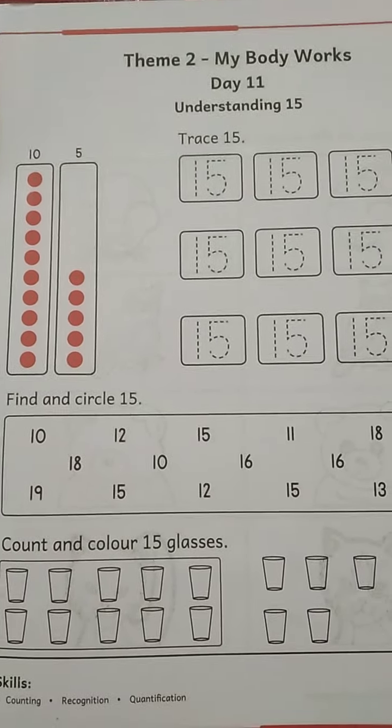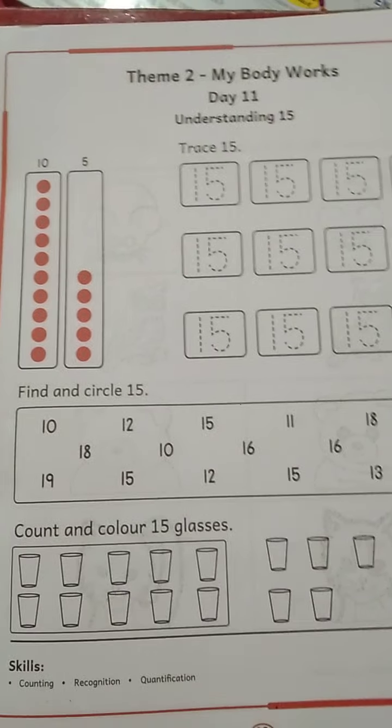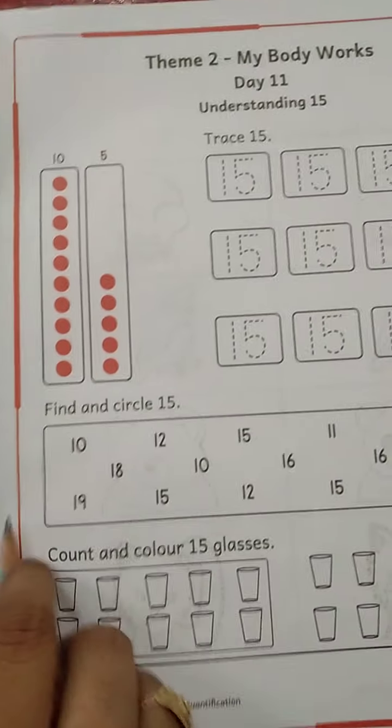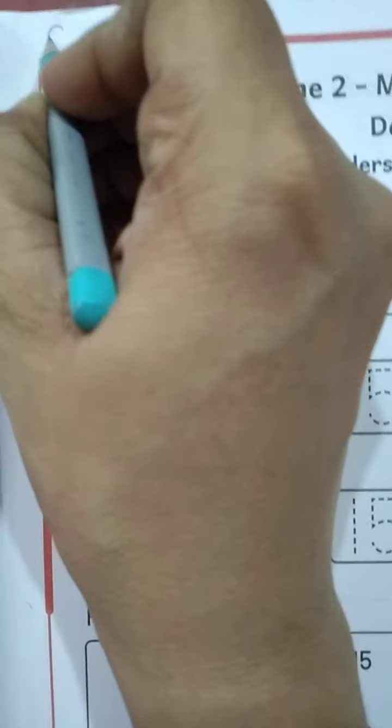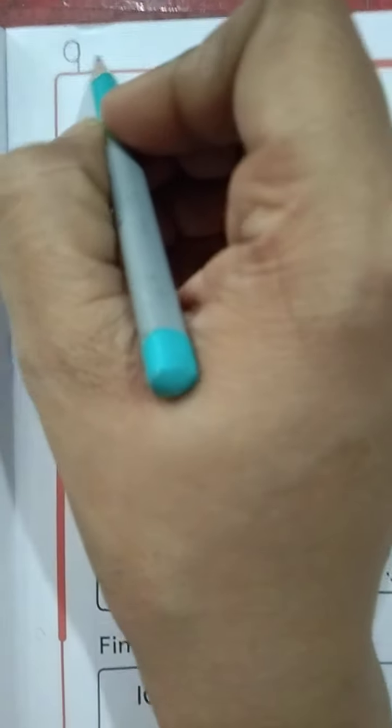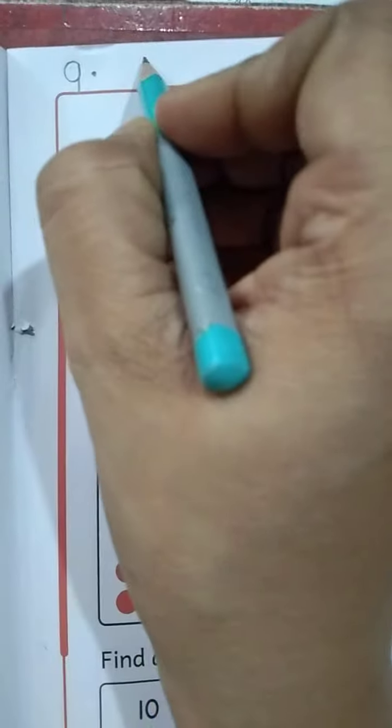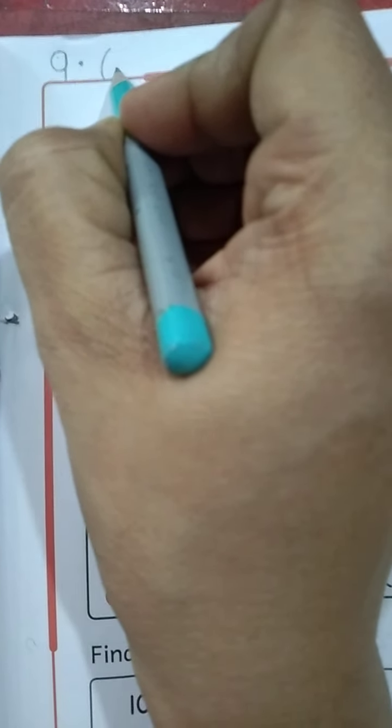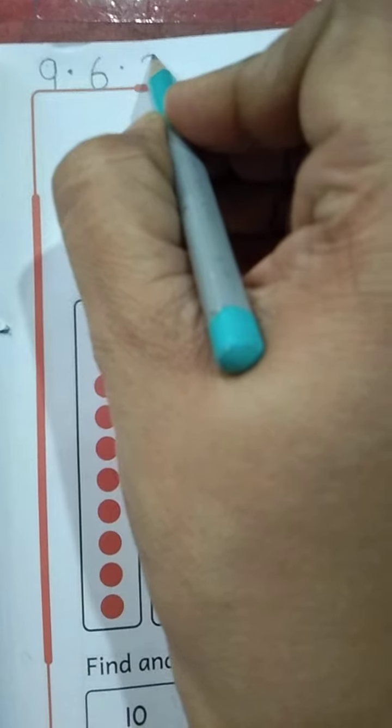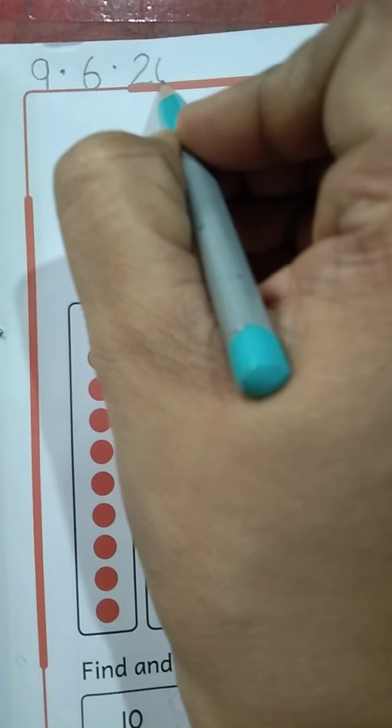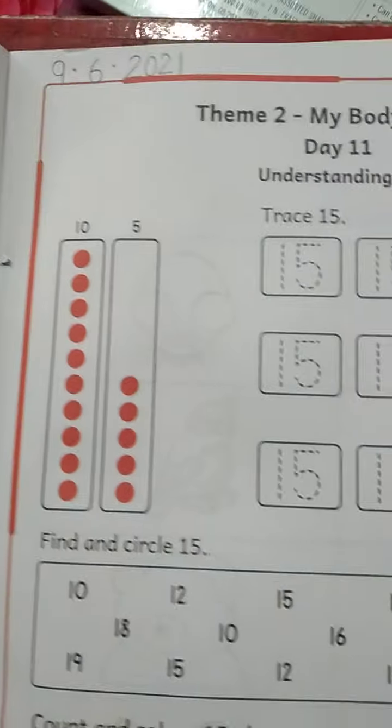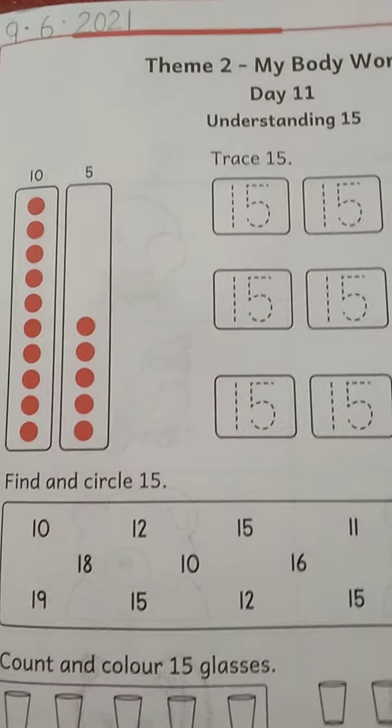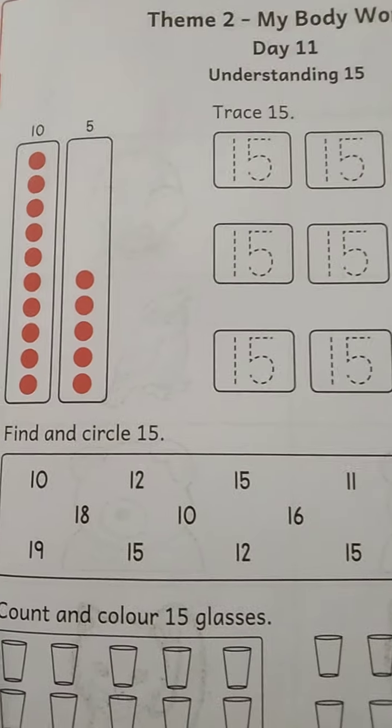So here we have number 15. Today we are going to do number 15. First of all, let's mention the date. Today is 9.6.2021. So after mentioning the date, let's start with our number 15.